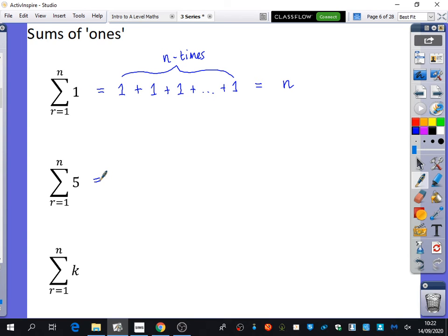Now, you can probably predict what this one is going to be. But this time it's going to be five plus five plus five, and that's going to happen n times. And if you've got n lots of five, it's five n.